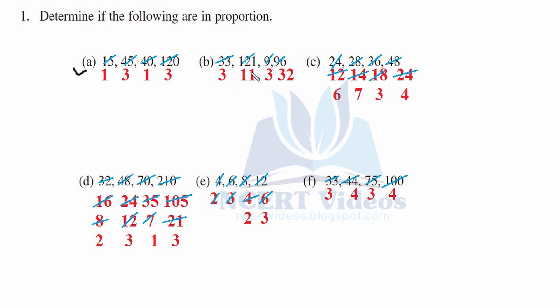Part b: 33 is to 121. 11 is a factor — 3 elevens are 33 and 11 elevens are 121. Now here 3 and 3 give 9, and 3 and 2 give 6. We can see they are not equal, therefore they are not in proportion.